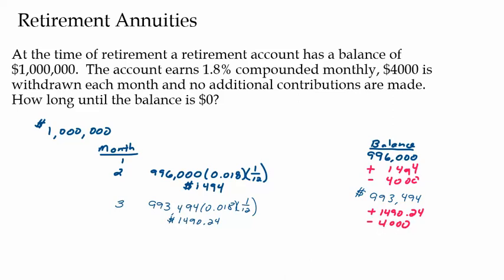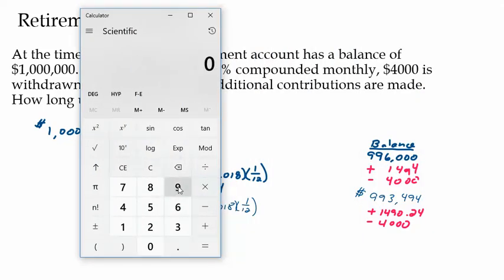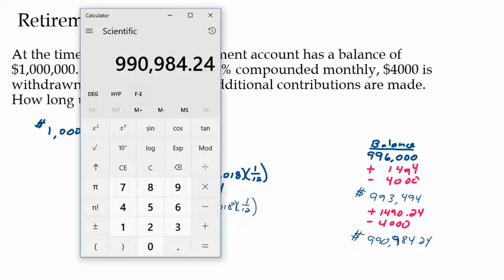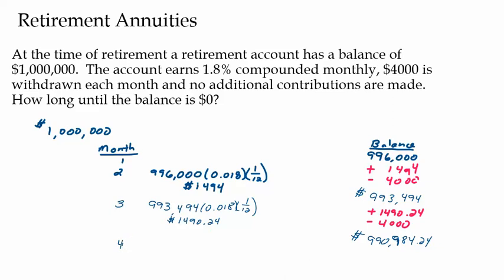We'll still add that in and we'll subtract out our $4,000. 993,494 plus our interest, subtract out our monthly cost. We're going to be left with 990,984.24. We would just continue doing this until our money runs out. Sounds like a real pain. Those of you guys that know spreadsheets could see how you could create a spreadsheet that would just keep calculating this, fill down kind of a thing.